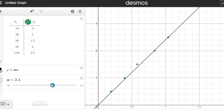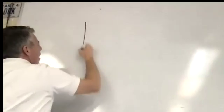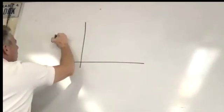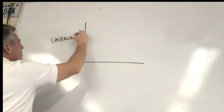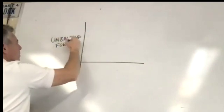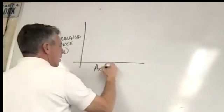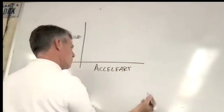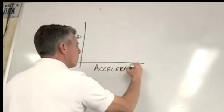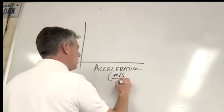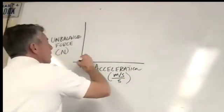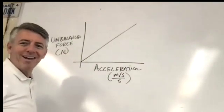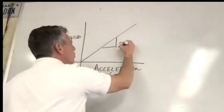So do you see this? Did you see the slope now? So what are the units if you graphed force on the y and meters per second — sorry, force and acceleration? You know, a graph where you have unbalanced force in newtons and acceleration in meters per second each second. And you got a nice little linear line, and you found the slope to be 2.4.